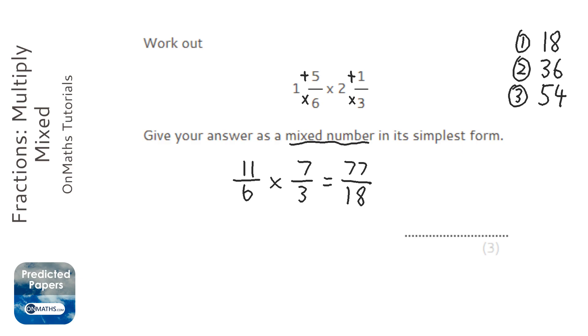4 lots of 18 will be 72, and 5 lots won't work. So we're going to have a big 4. And then how many left over? Well, if 4 lots of 18 is 72, that leaves 5. So the answer would be 4 and 5 eighteenths.